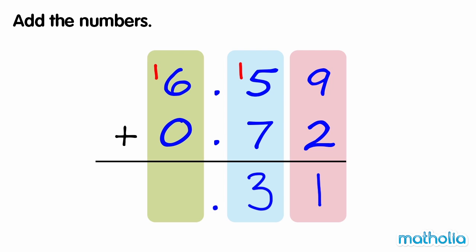Finally we can add the ones. 1 one plus 6 ones plus 0 ones is 7 ones. So 6.59 plus 0.72 equals 7.31.